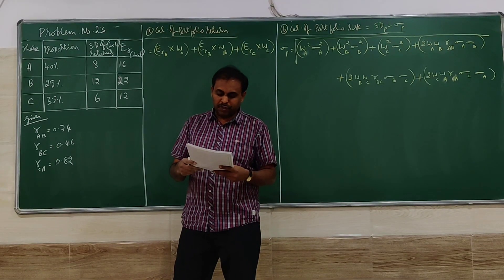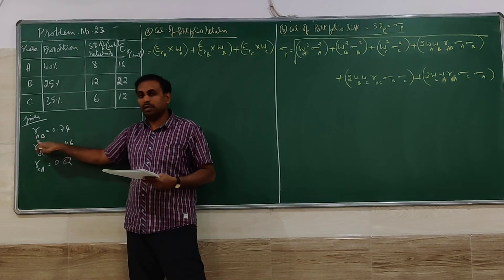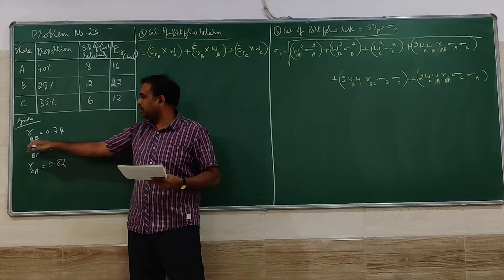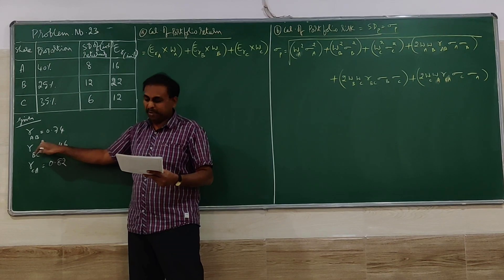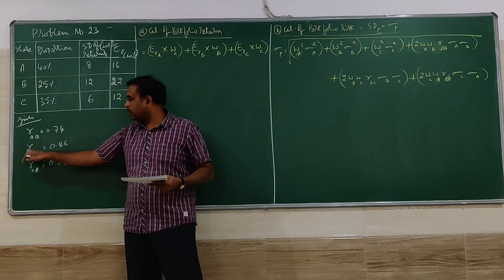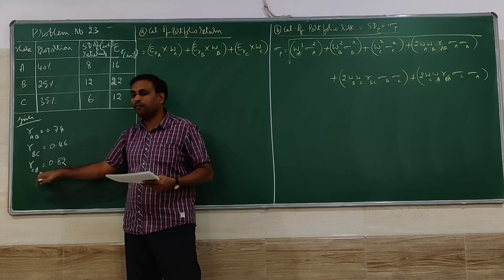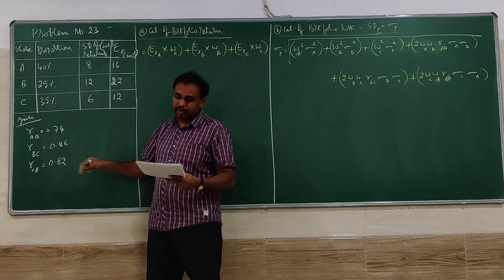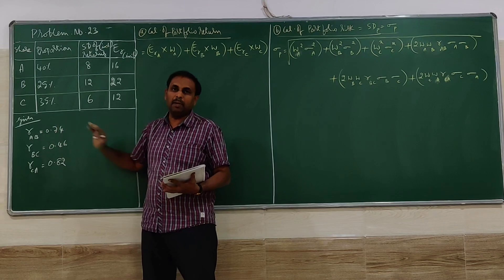Correlation coefficient of AB. Correlation symbol is R. Correlation is represented by R. Correlation of A and B is 0.74, correlation of B and C is 0.46, and correlation of C and A is 0.82. So we have been given this information in the last part of the problem.